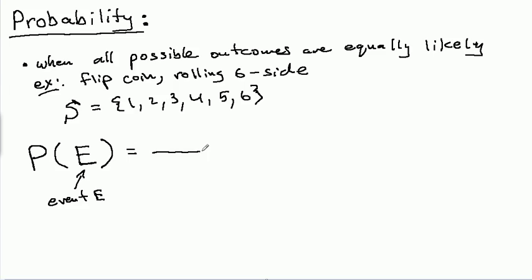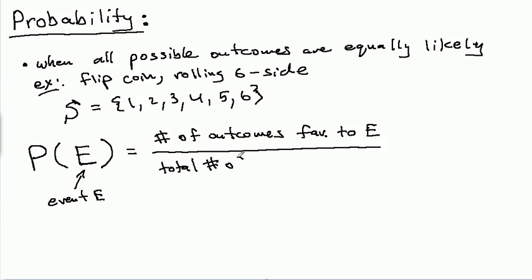So the probability of E in this situation, when all possible outcomes are equally likely, is equal to a fraction. And it is a fraction, which is a count in the numerator. It's the number of outcomes favorable. So let me just abbreviate that. Favorable to E. So basically, how many outcomes are in E.